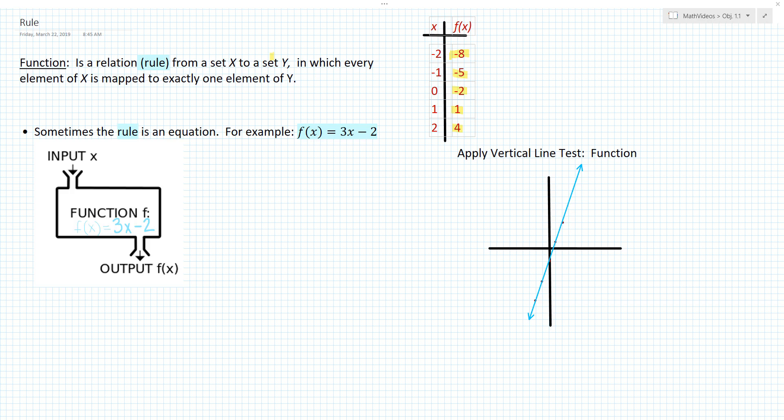Now the question becomes, is this relation a function? Well, from the graph, you could apply the vertical line test. We would see that if we drew a vertical line anywhere on the graph, no matter what, we only intersect the graph at most one point.